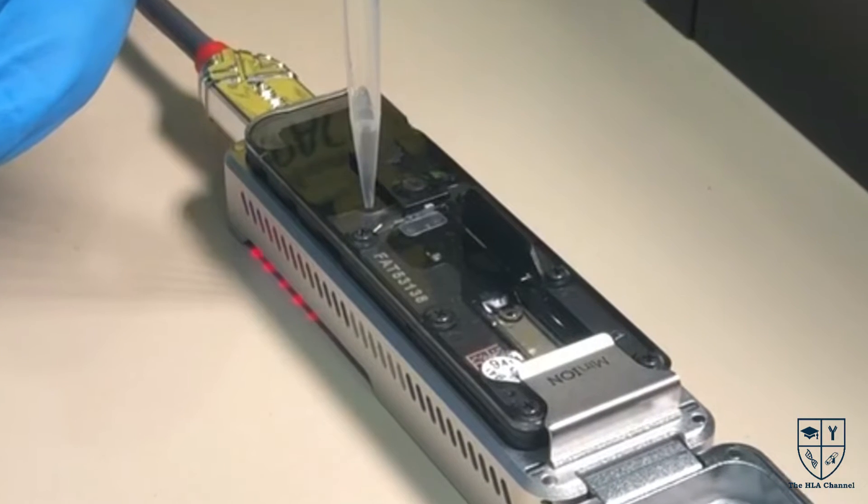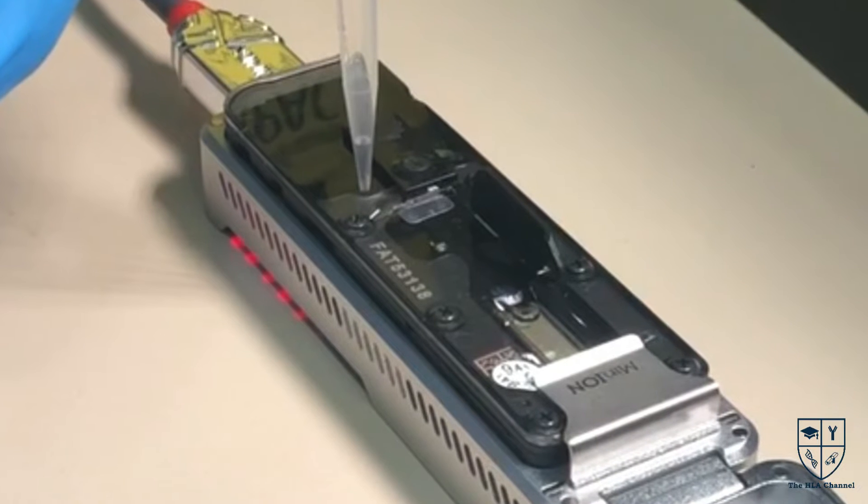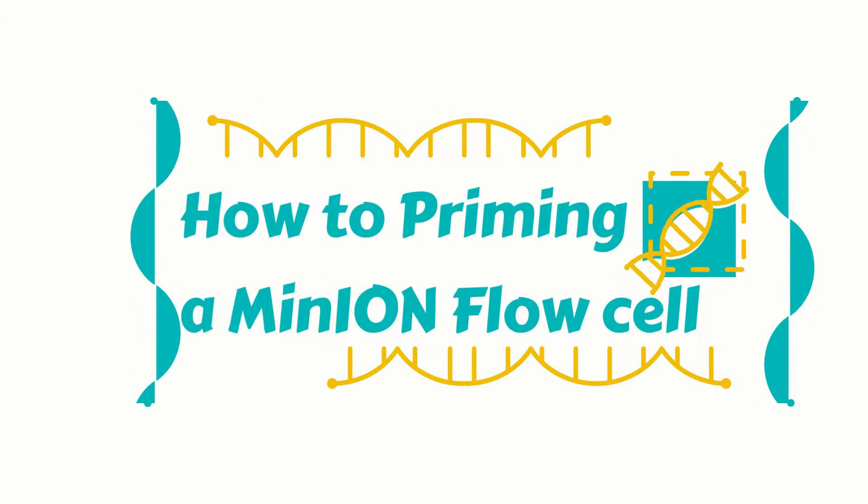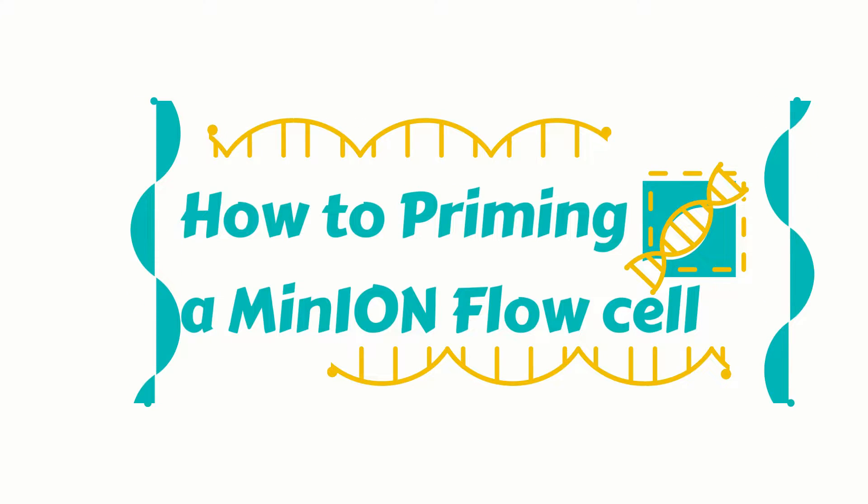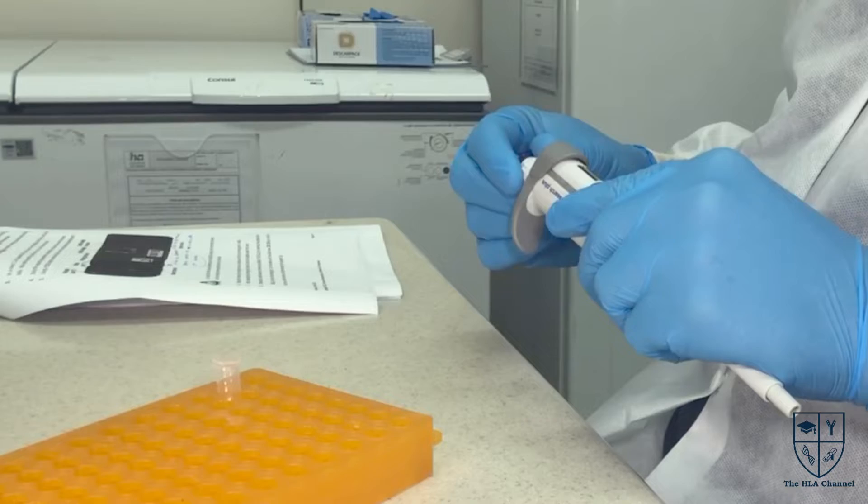Priming the MinION flow cell is an important step to prepare the flow cell for sequencing. In this video, you will follow the protocol and get some important tips to do the priming of the flow cell and prepare the library to be loaded into the flow cell after its priming.